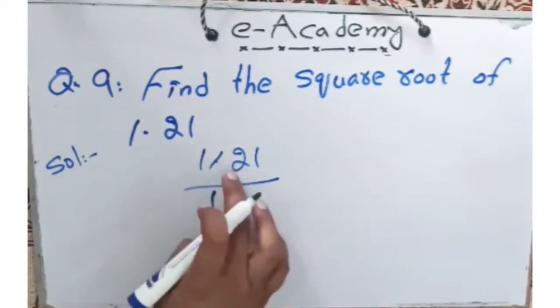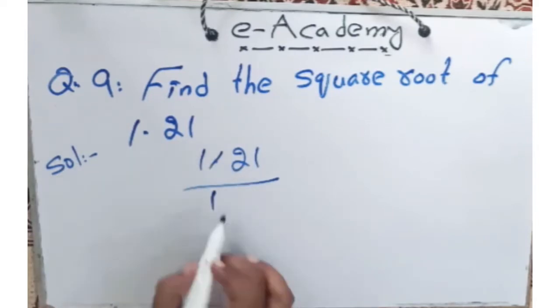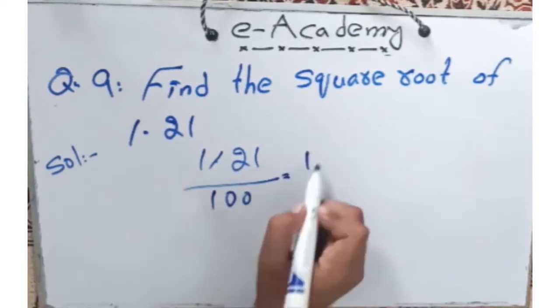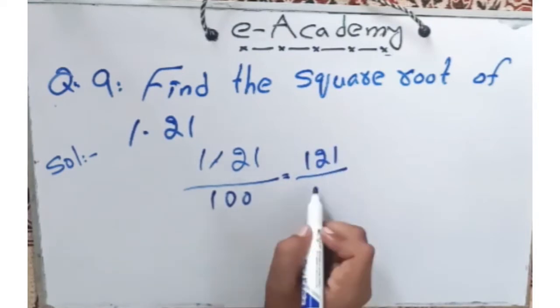So the decimal has a number of numbers. And the number is equal to zero. So that is the number 121 upon 100.